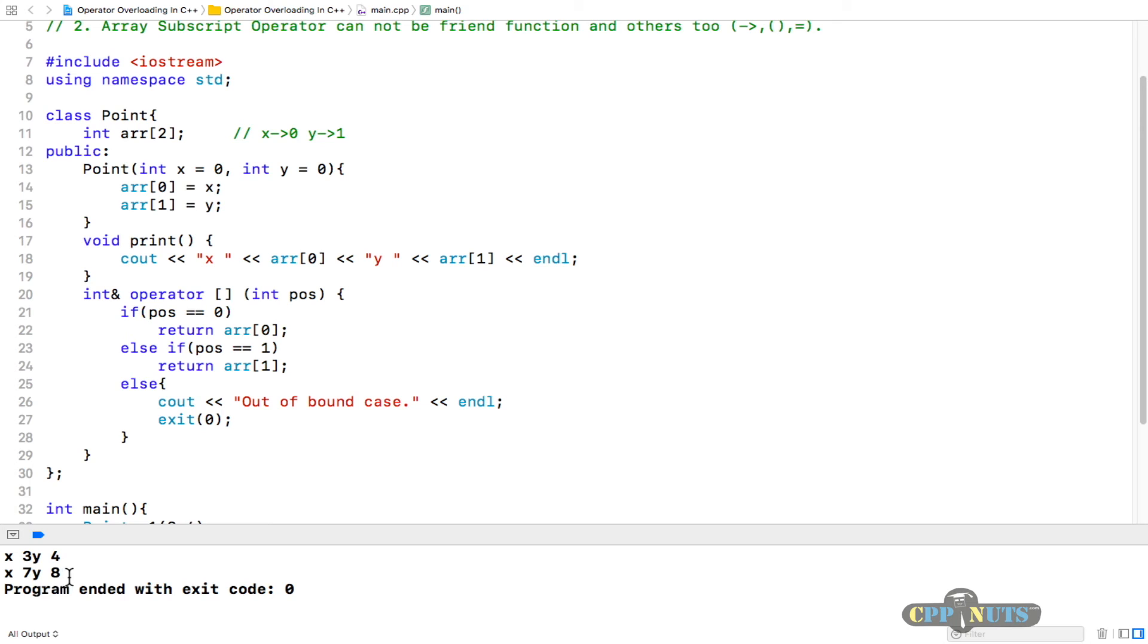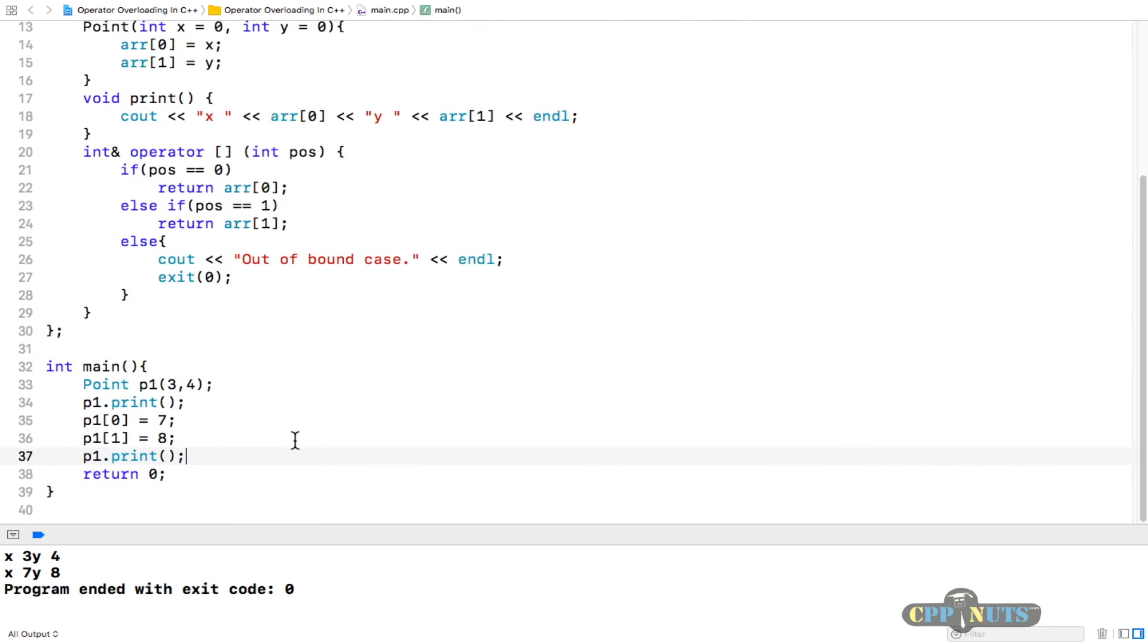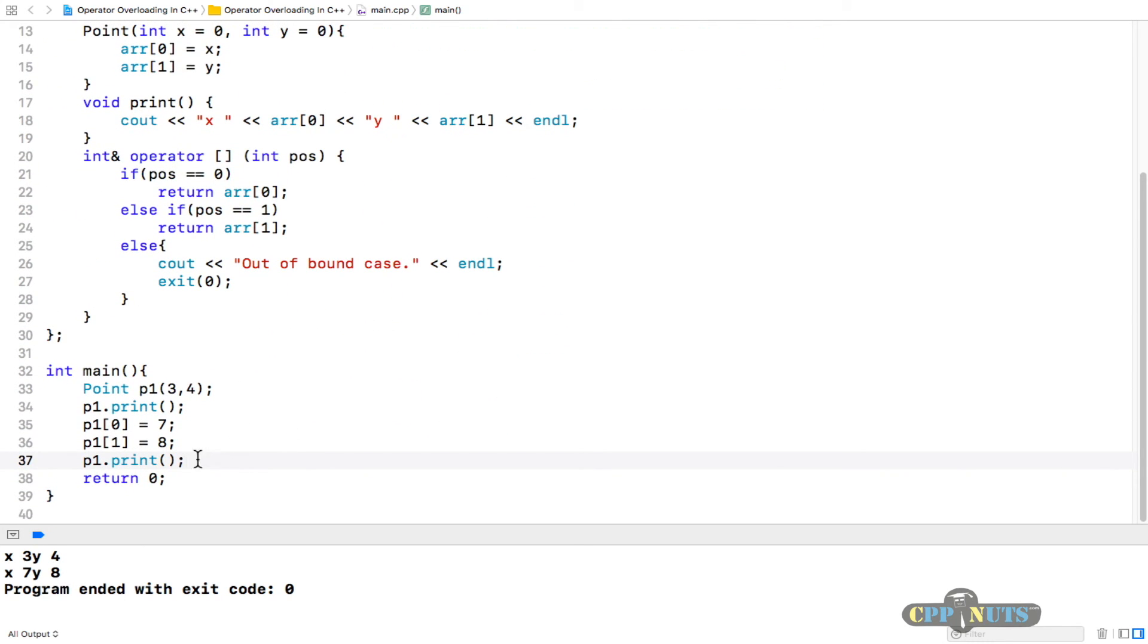p1 now, p1.print after change. It should be different. See, now it is seven and eight. This is quite logical. But let's suppose after this you are trying to do something like accessing the second index and want to initialize with 10.